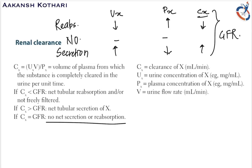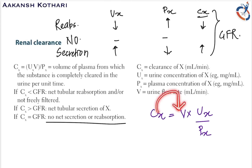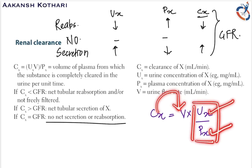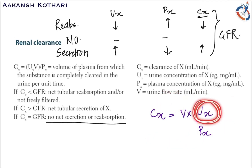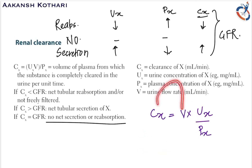The clearance of any substance X — CX — is equal to the urine flow rate multiplied by the concentration of substance X in the urine, divided by the concentration of substance X in the plasma. When the urine concentration equals the plasma concentration, clearance equals the urine flow volume.